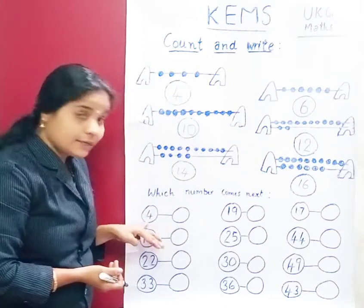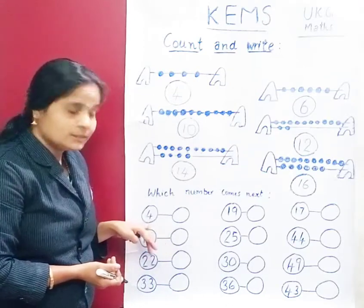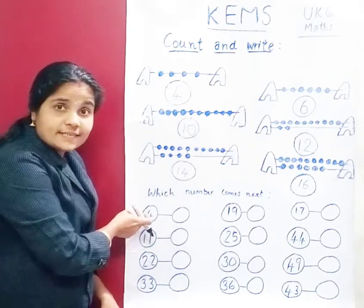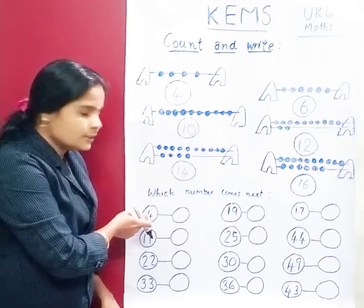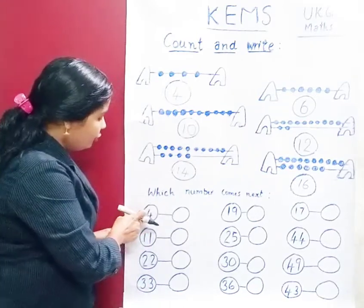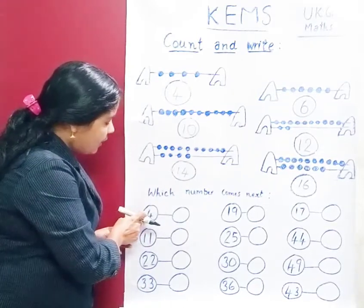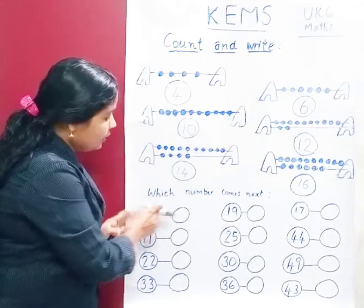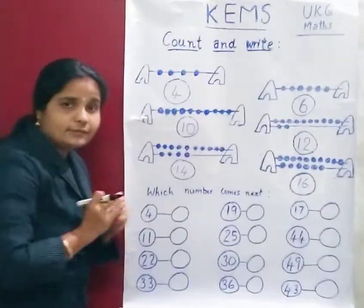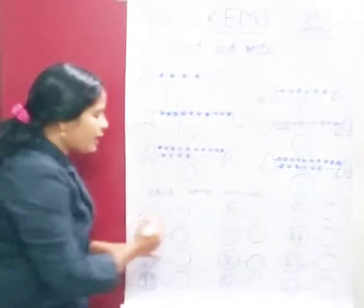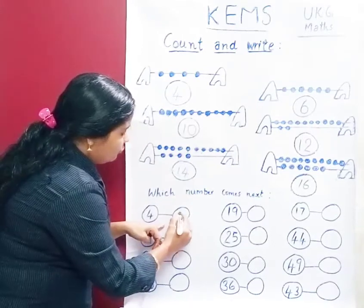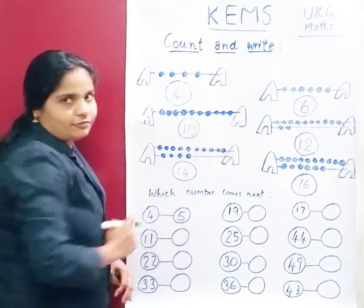First number — which number is this? 4. Very good. So 4, then next number after 4 is 5. Very good. 4, 5.